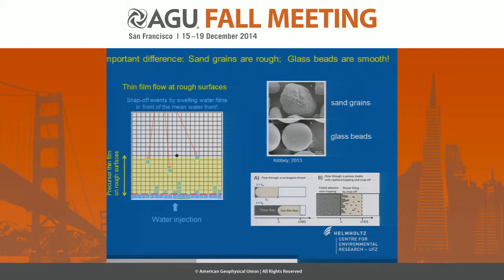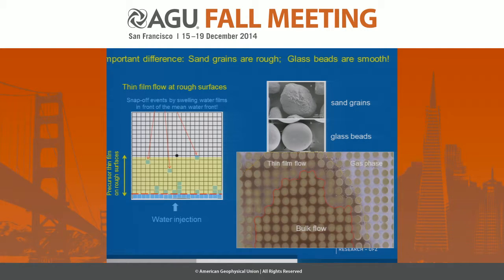Importantly, the micromodels have rough surfaces. In natural sand you always have rough surfaces with microchannels, and these microchannels produce precursor thin film flows — well known in literature — giving a totally different dynamics of capillary trapping. We always see bulk flow and in front of it this thin film precursor flow.